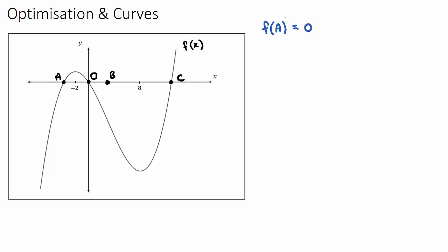Next, what does f'(A) equal? f'(A) means what is the slope or gradient at point A. f(A) gives the y value, while f'(A) gives the slope. At point A, we don't know the exact slope value, but we can see it is part of a line sloping upward, so the first derivative at A will be some positive answer.